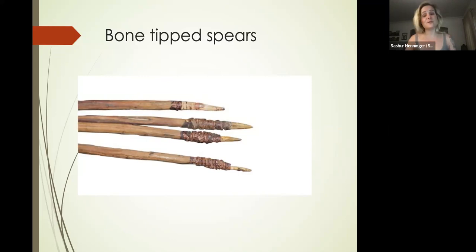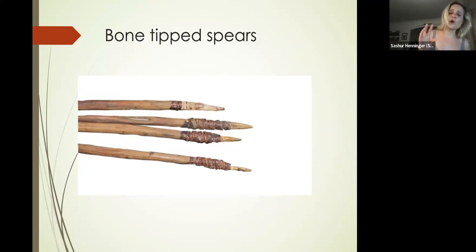Speaking of long distances, we are also the first species that uses bone-tipped spears. Bone is light and hollow, so it is going to move through the air at a greater velocity and be much sharper.